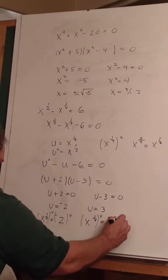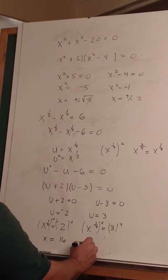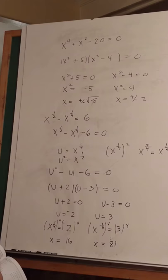Well, negative two to the fourth power is 16, and three to the fourth power is 81. All right.